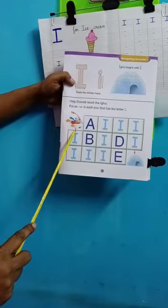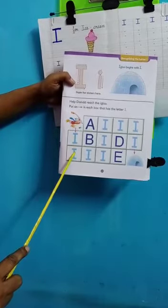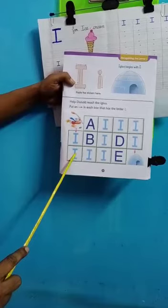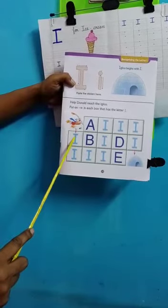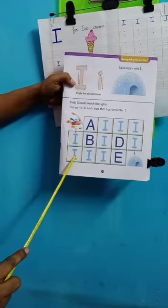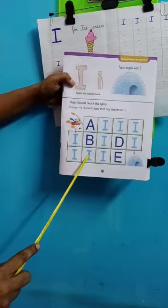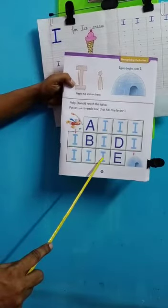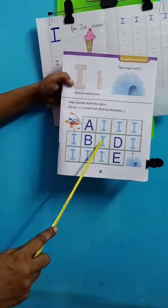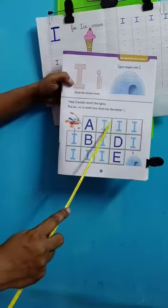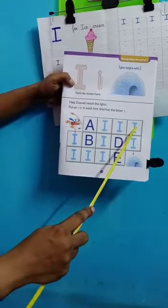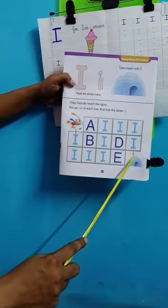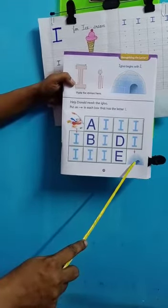So with your pencil, just put small arrows on the I's. So we come down for the first arrow, we go to the second I, then we go to the third I, then we go to the fourth I, then we go up again to the fifth, sixth, then we go sidewards again, seventh, eighth and we come down nine and we come to the igloo.